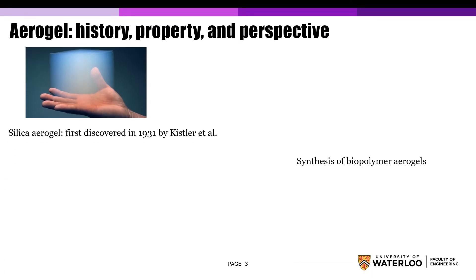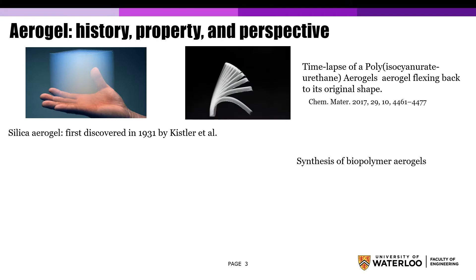Aerogel was first discovered by Kistler in 1931 using a supercritical drying technique on silica gel. Since then, more and more types of aerogel were synthesized with the development of drying techniques. Compared to inorganic aerogels, polymer aerogels display better mechanical properties.